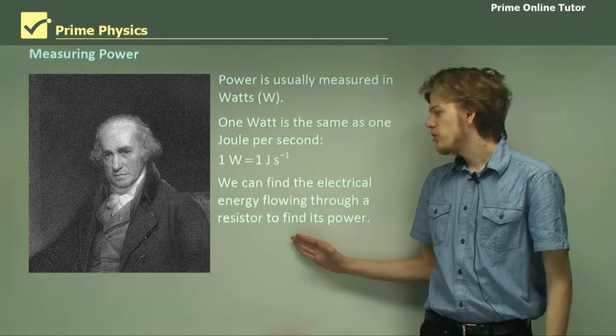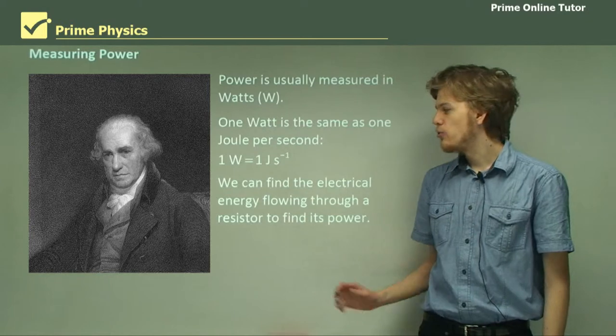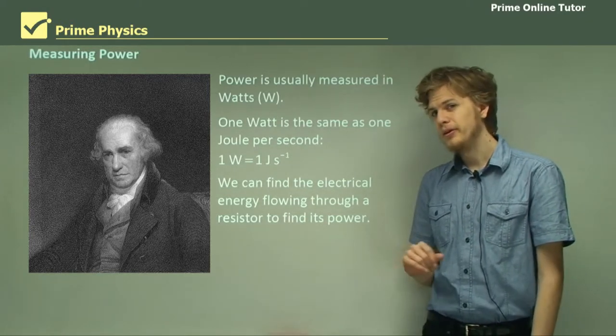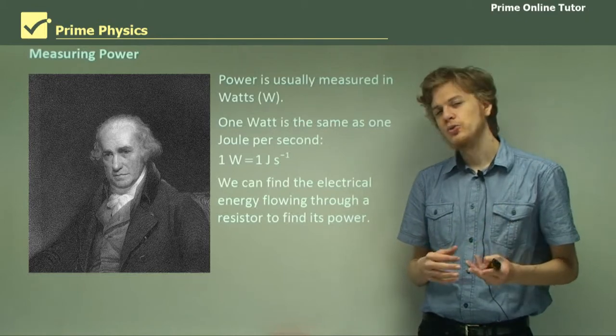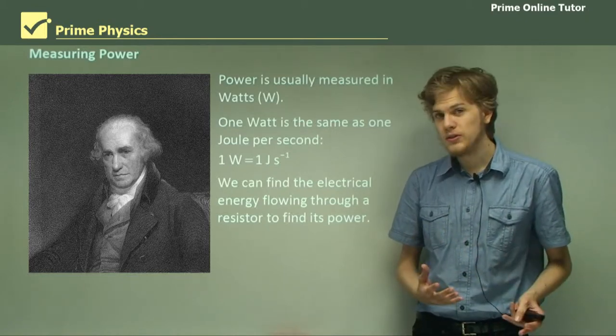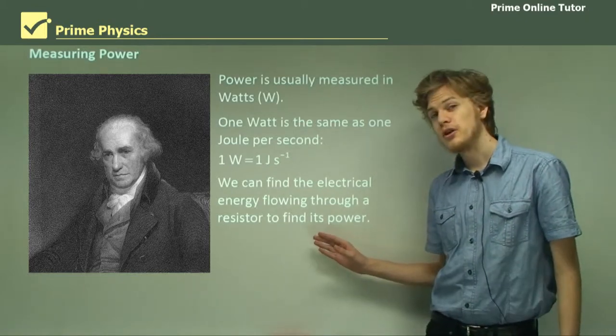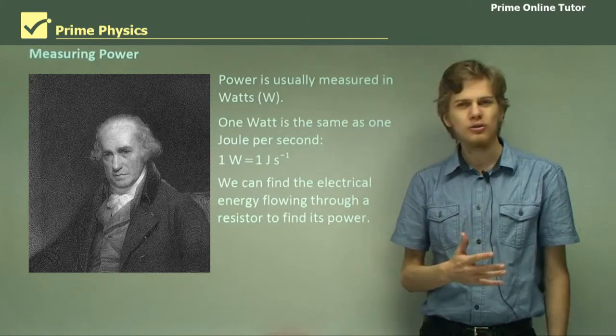So we can find the electrical energy flowing through a resistor in order to find its power. And if we can somehow relate this energy to, for example, the current or the voltage, that will allow us to use current and voltage in order to find the power of a resistor.